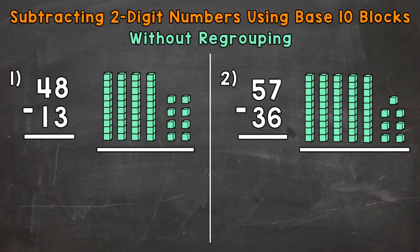Let's jump into number one where we have 48 minus 13. We're starting with 48 and subtracting or taking away 13. To the right of the problem I have 48 represented by base 10 blocks.